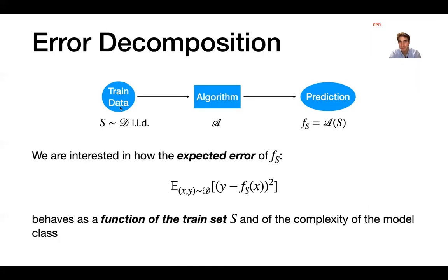We have a training set S, a learning algorithm A (which can be least squares, gradient descent, or any cost minimization algorithm), and using A and S we learn a prediction function F_S. We are interested in how the expected error of F_S behaves as a function of the training set S and as a function of the complexity of the model class.